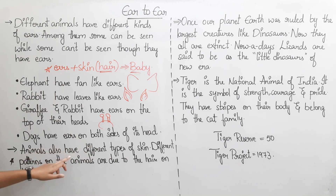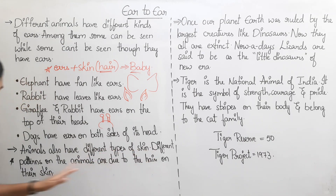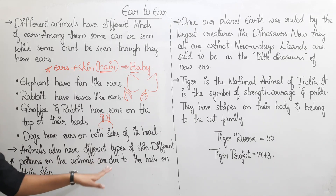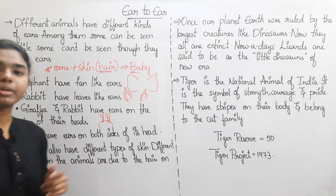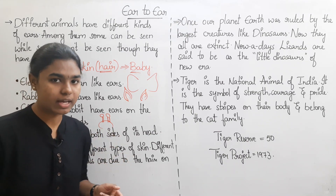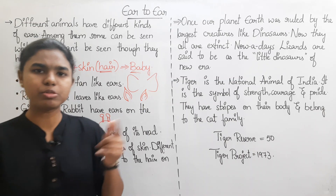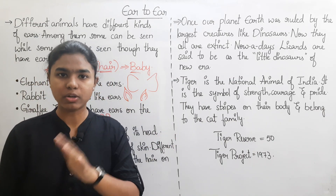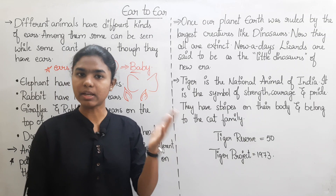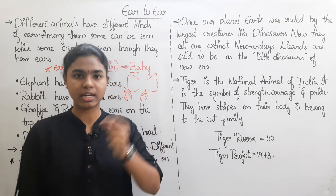Animals also have different types of skin. Different patterns on animals are due to the hair on the skin. There are different types of patterns — tiger has a type of pattern, zebra has a black and white stripe type of pattern.